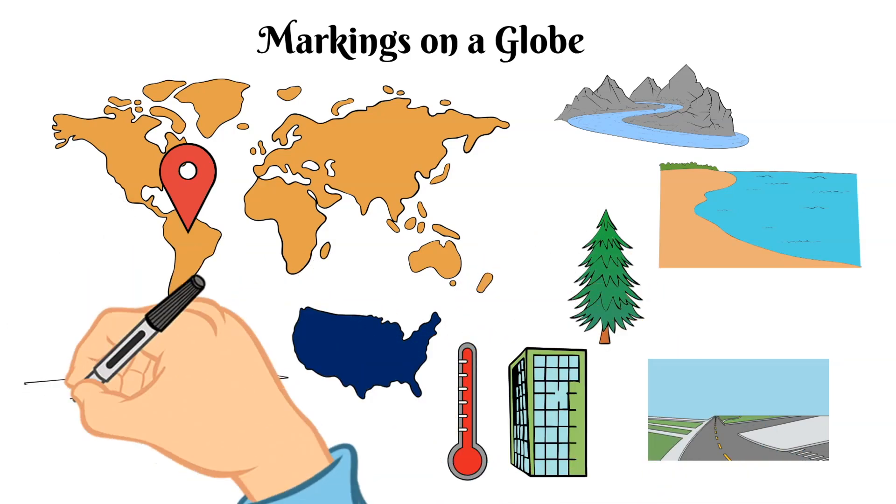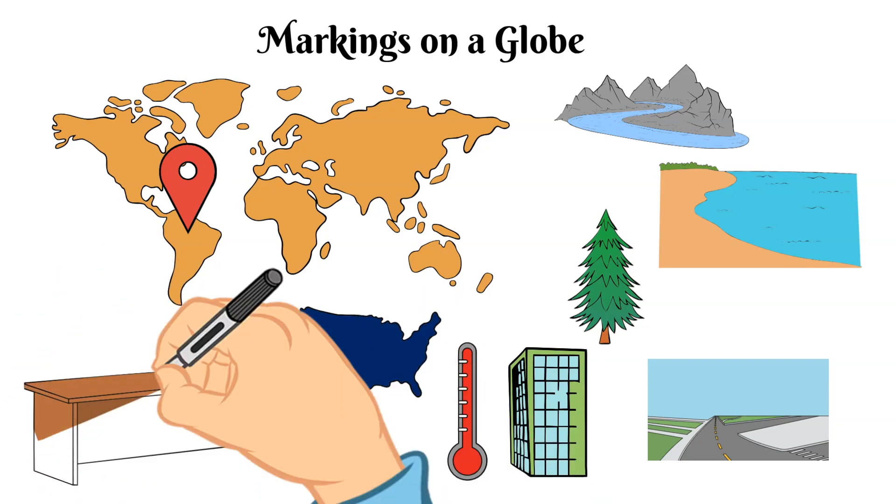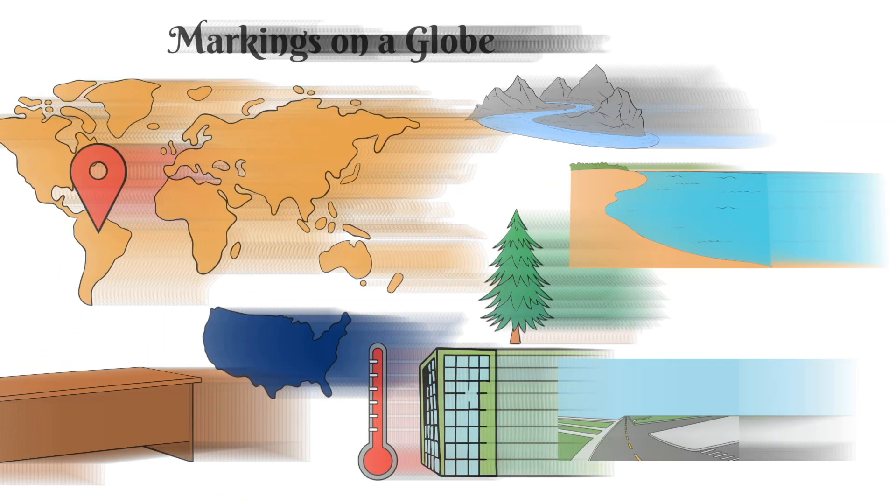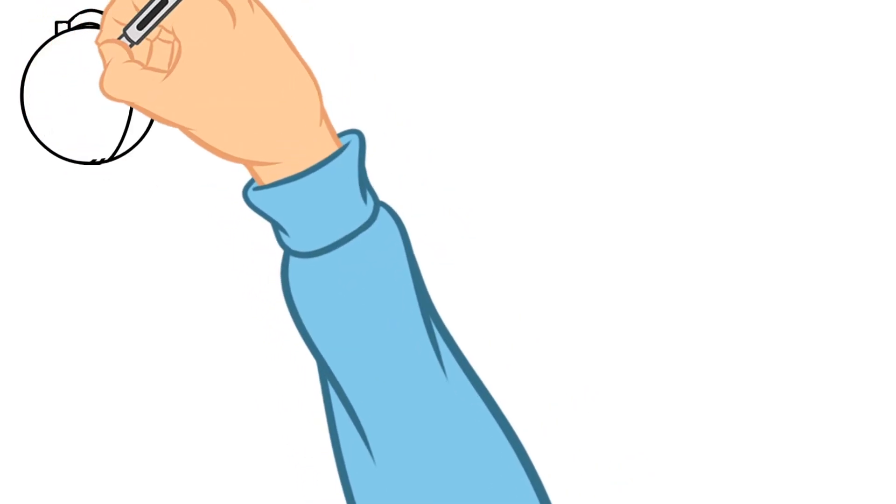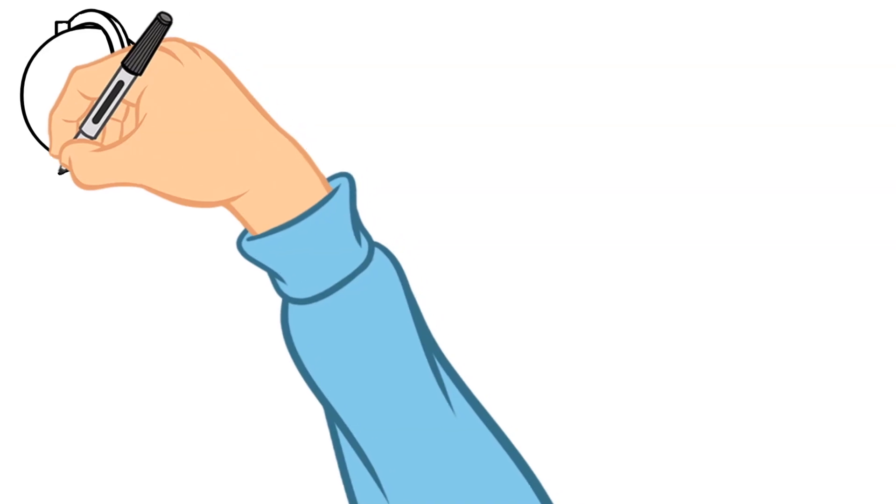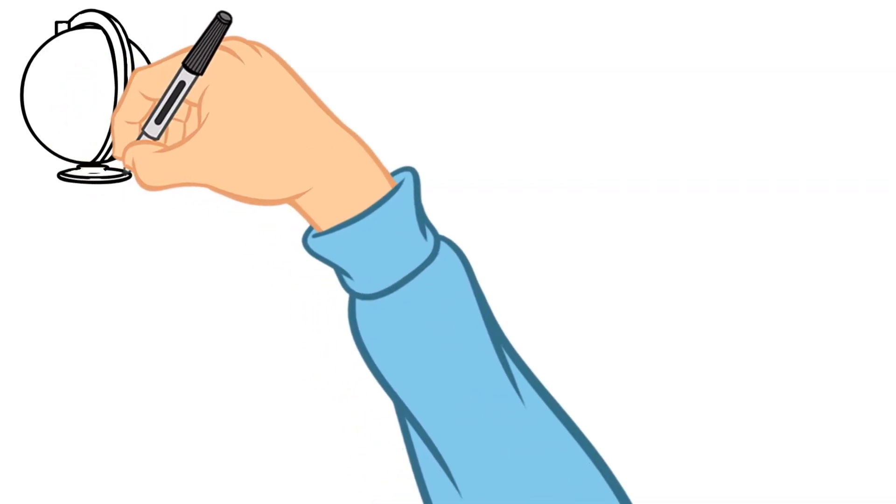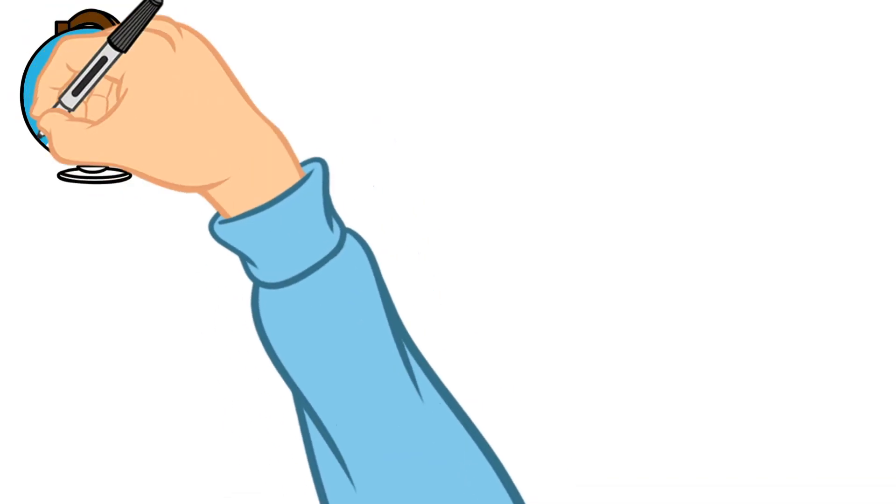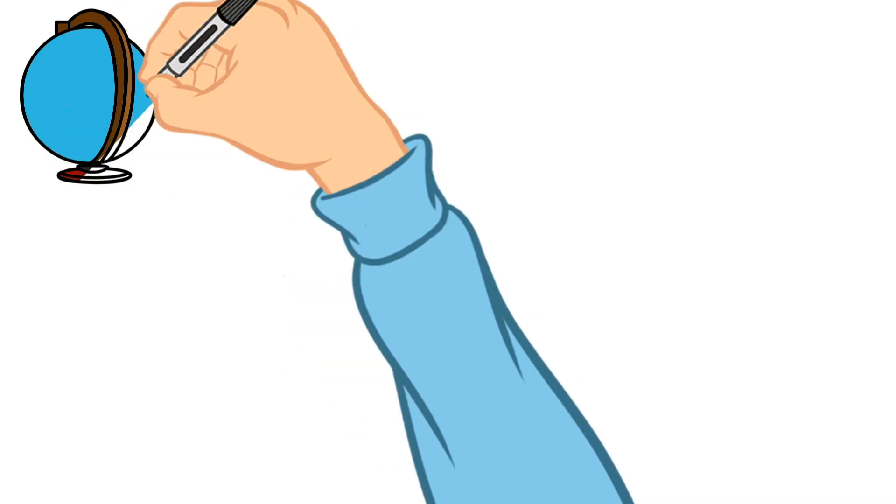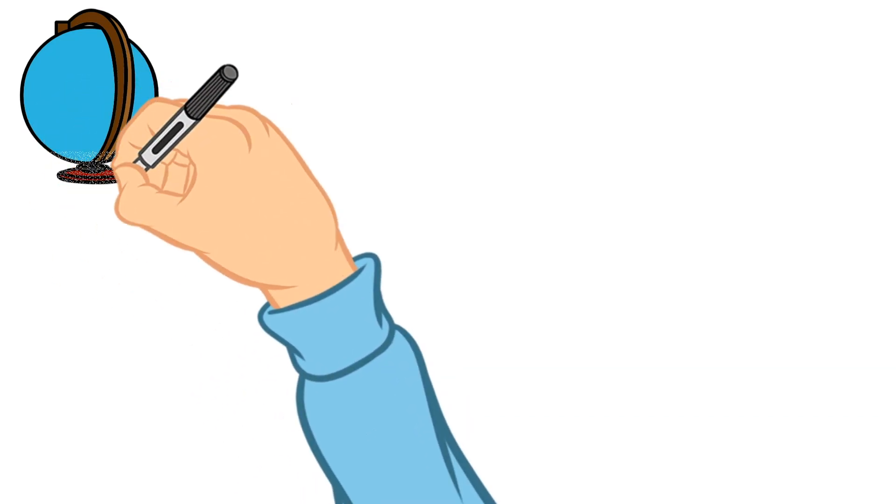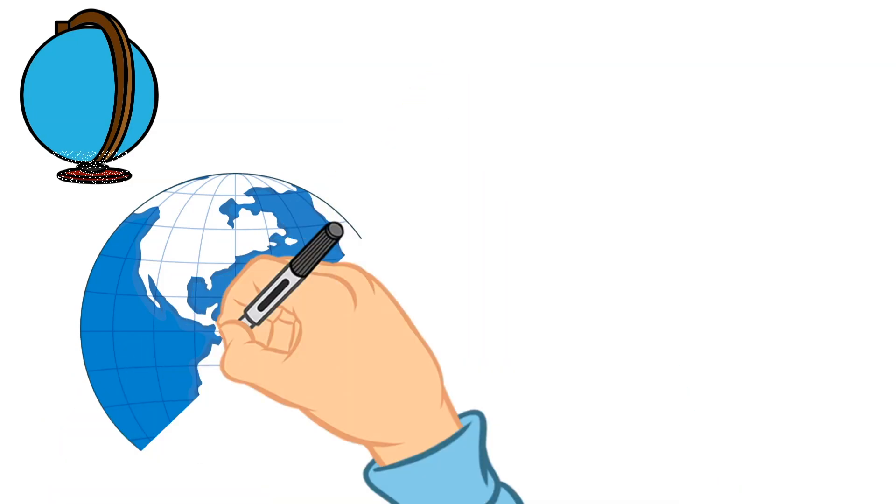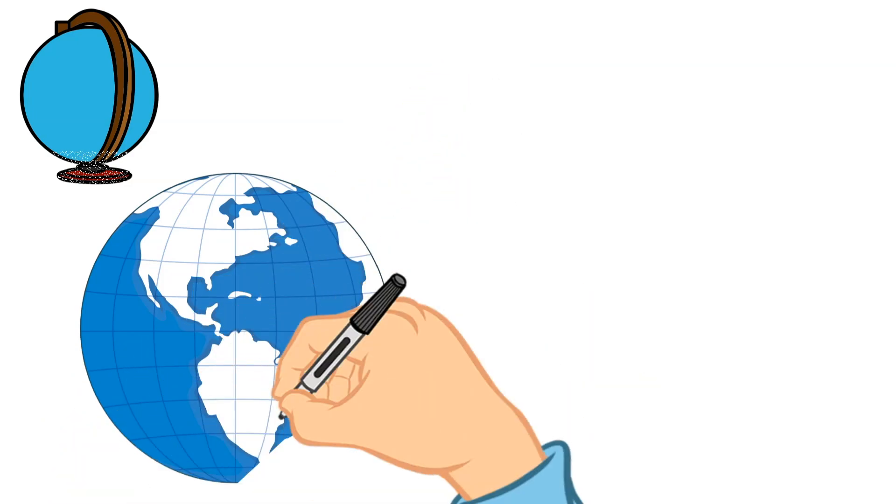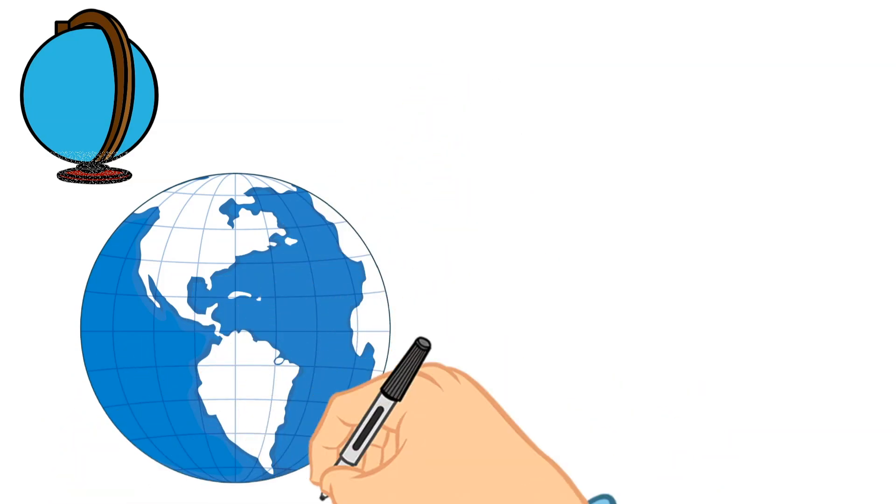Now most maps are drawn on a flat surface but if there is a map that is displayed on a round surface we typically call this a globe. Globes provide pretty much the same kind of information that a flat map would but because the earth is almost round a globe is the best representation we have of the earth. So truly a globe shows how the earth would look like if we were in outer space looking down on it.